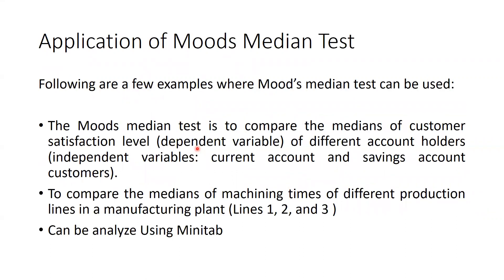Regarding the application of Mood's Median Test — we can use it to compare the median customer satisfaction level, which is the dependent variable, of different account holders. For example, current account holders and savings bank account holders are two independent samples. We want to check whether the satisfaction level differs between these two groups.